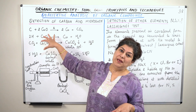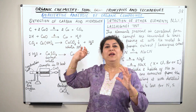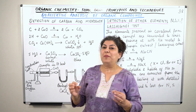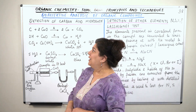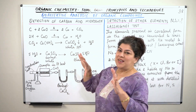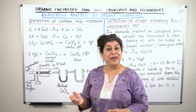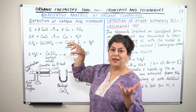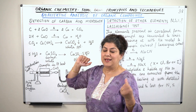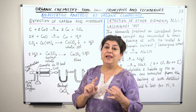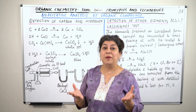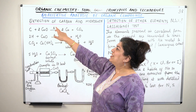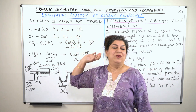In this video, we will determine how to do qualitative analysis of the elements. The first step when you are given an organic compound is to determine whether it is an organic compound or not — that is, is it composed of carbon and hydrogen? Is it a hydrocarbon? The first step is the detection of carbon and hydrogen.